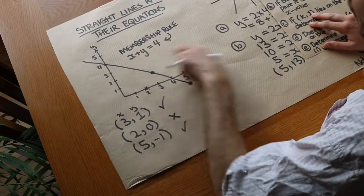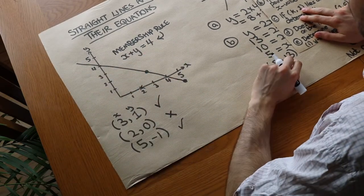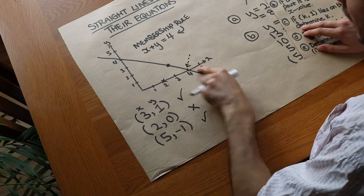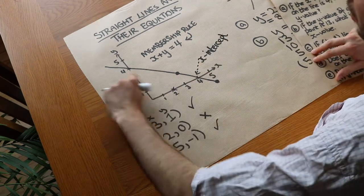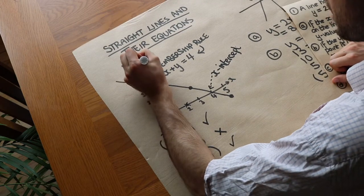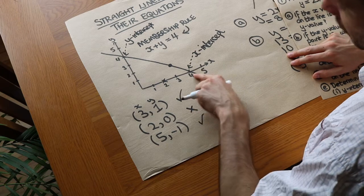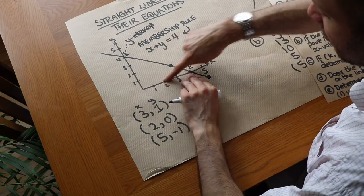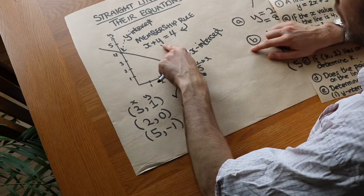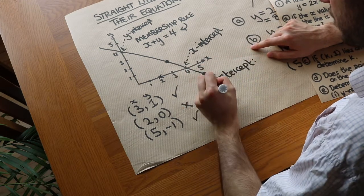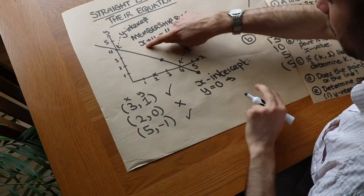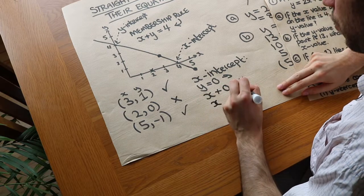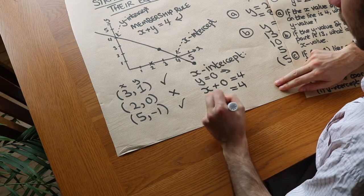There are two important applications of this theory. One is that we can sketch straight lines, which we'll do in the next video. The other is that we can find the x-intercept and the y-intercept. Where the line cuts the x-axis is the x-intercept, and where it cuts the y-axis is the y-intercept. On the x-axis the y value is 0, so to find the x-intercept we make y equal to 0. Substituting into x plus y equals 4 gives x plus 0 equals 4, so x equals 4, giving the coordinate 4, 0.